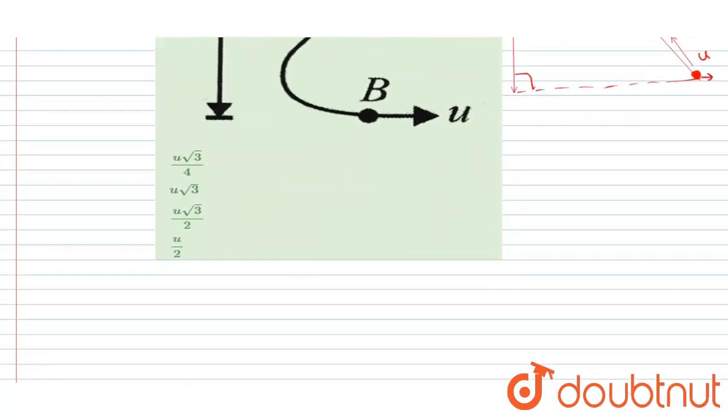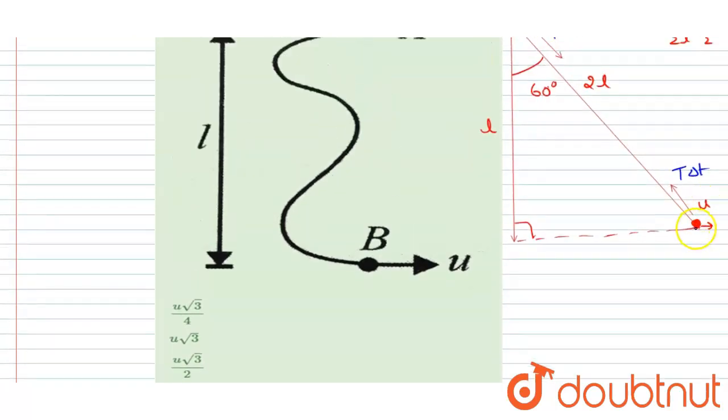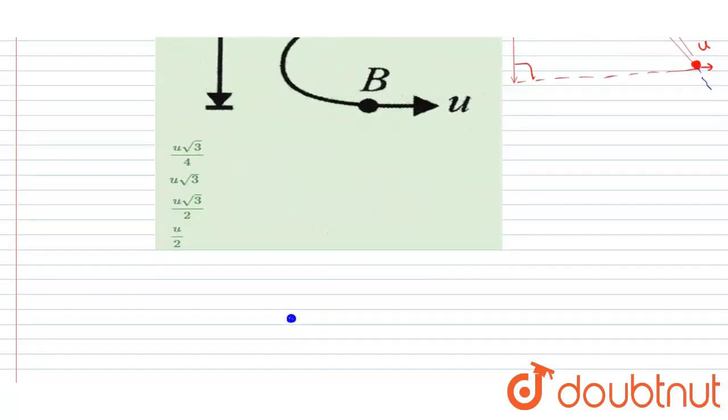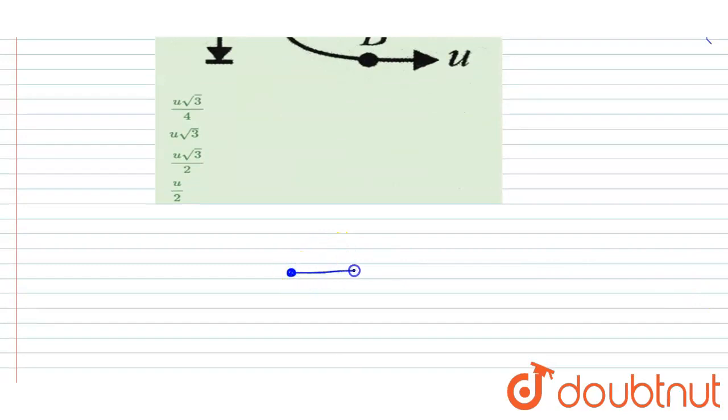So if you see the B particle, it will be having two components of velocity, one along the string, another one perpendicular to the string. So if you see, the string is making an angle of 60 degrees with the vertical and u is in this direction, and here this angle is 60 degrees.